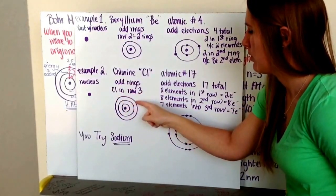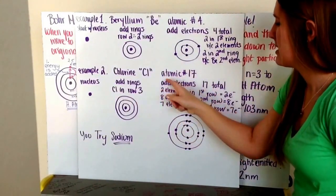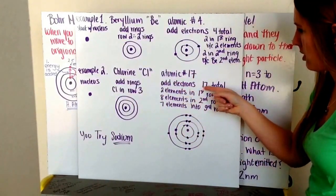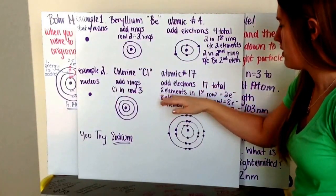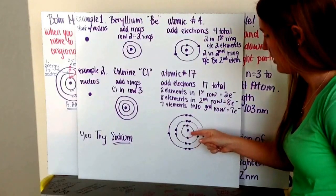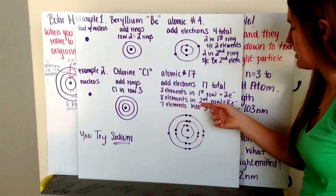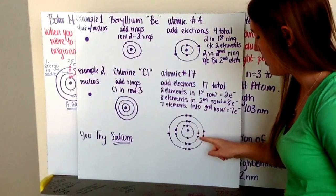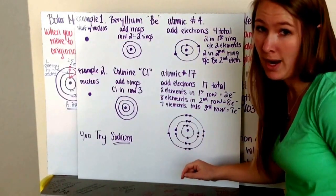It's atomic number 17, so when I add my electrons, I need to add 17 total electrons. Two elements in the first row, therefore two electrons go on my first ring. There's eight elements in the second row, therefore eight electrons go on my second ring. And I like to pair my electrons, and you're going to learn why in the next video.